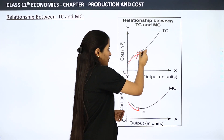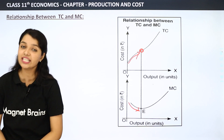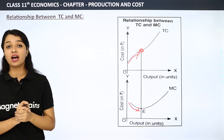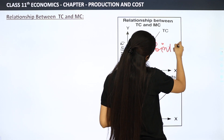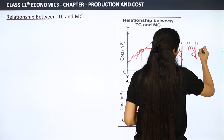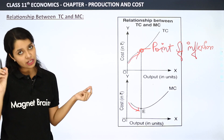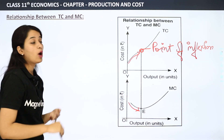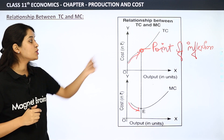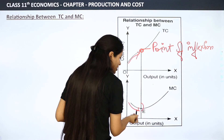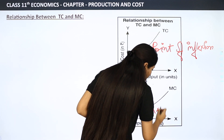Then, there is a point where our TC is increasing at a diminishing rate, but then it changes to an increasing rate. Which point is this? This is our point of inflection — the point where TC changes its rate from diminishing to increasing. At the point of inflection, our MC will be at its minimum point.